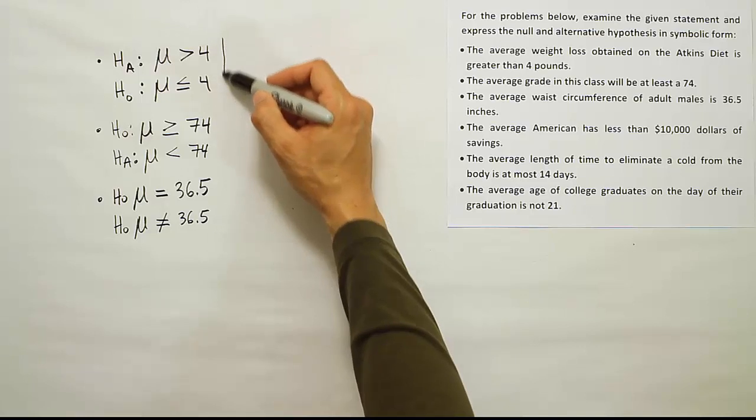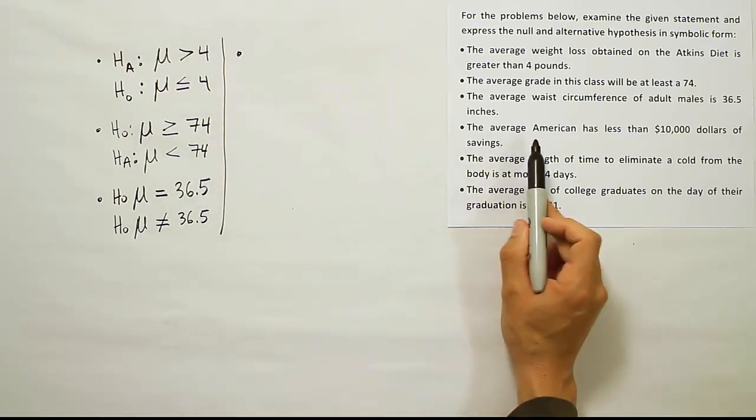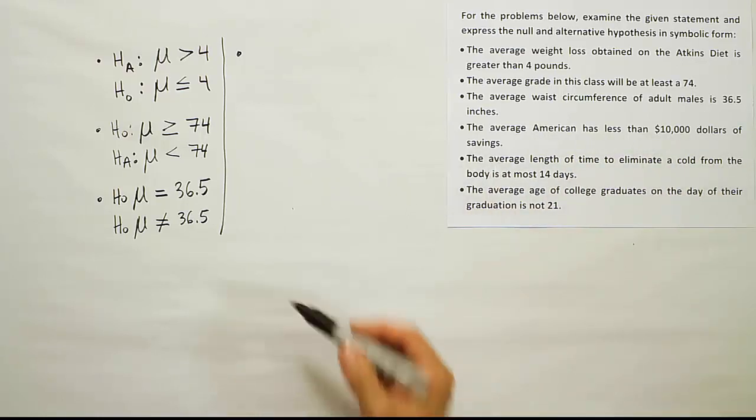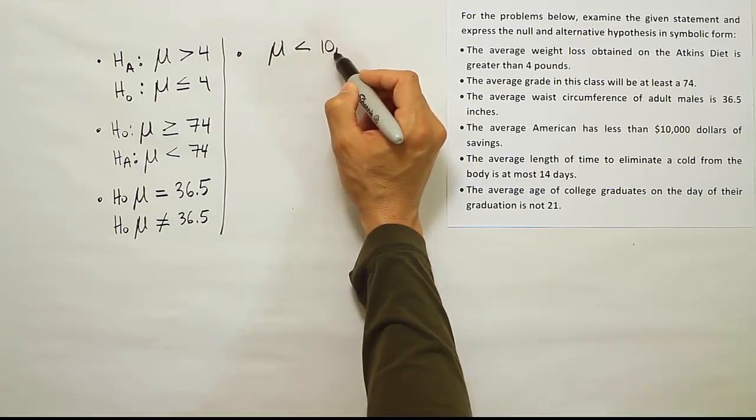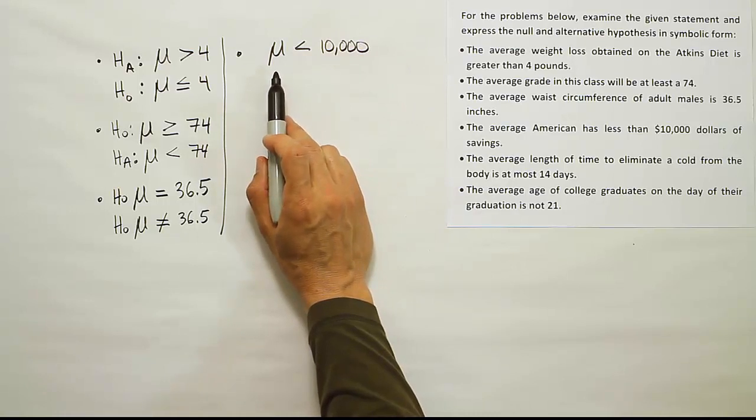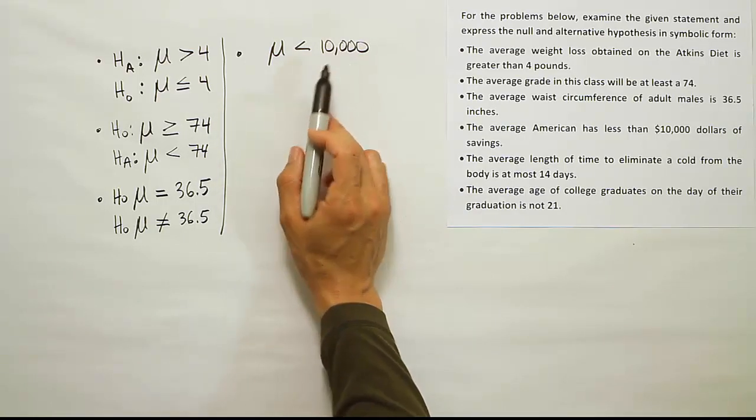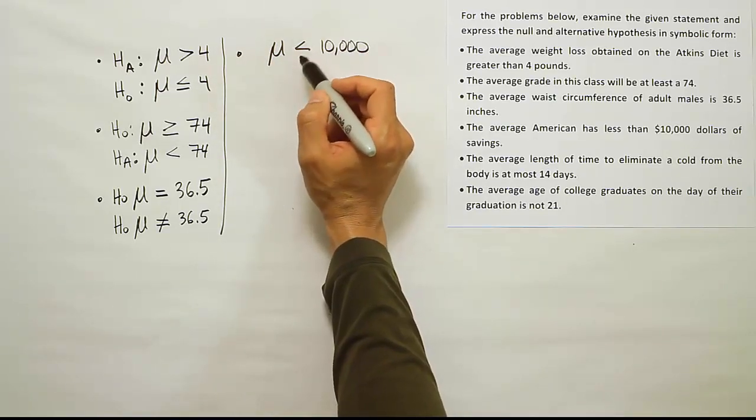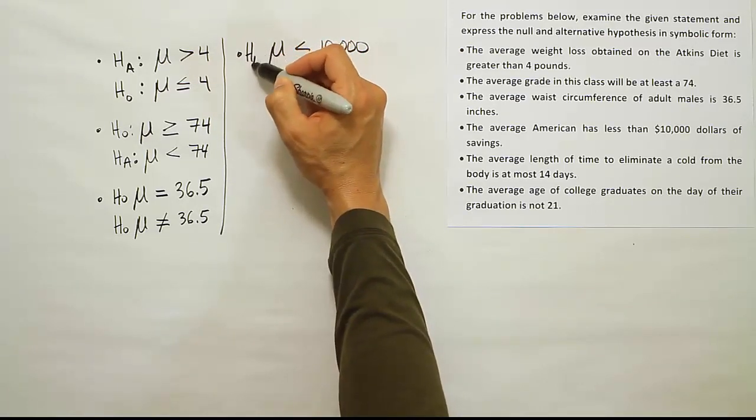The next bullet here: The average American has less than ten thousand dollars of savings. So the average is less than ten thousand dollars. The amount of money the average American has in the bank is on average less than ten thousand dollars. Since this does not have an equal sign - since it's either less than, greater than, or not equal to - any of those three symbols make it Hₐ.